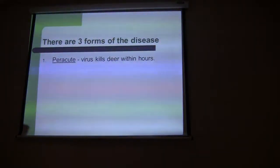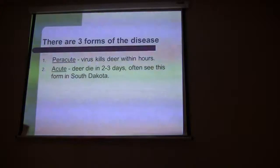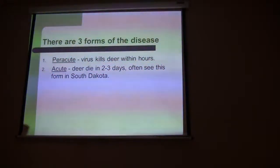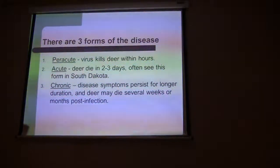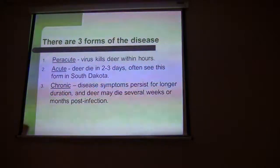There are three forms of EHD. There's peracute, which kills the deer actually within a couple hours. There's the acute form, which probably most of the deer in South Dakota have — the deer die within three days. And there's a chronic form, which we may have some of as well, where disease symptoms persist for a longer duration and the deer can die several weeks or even months post-infection.